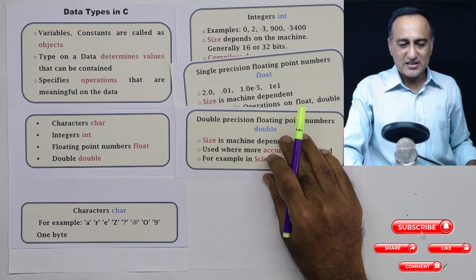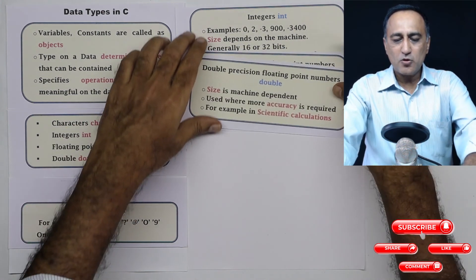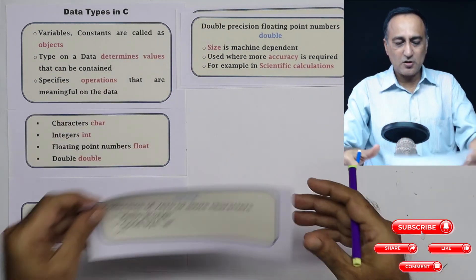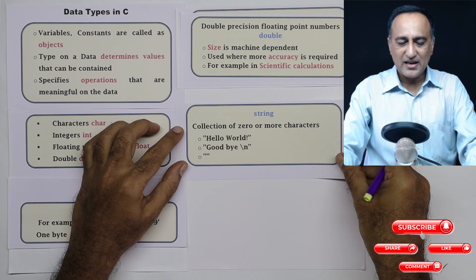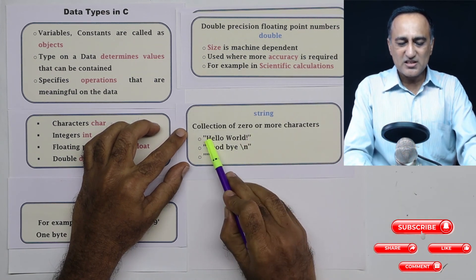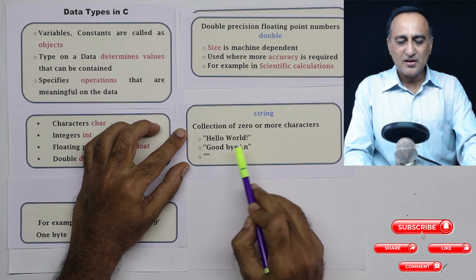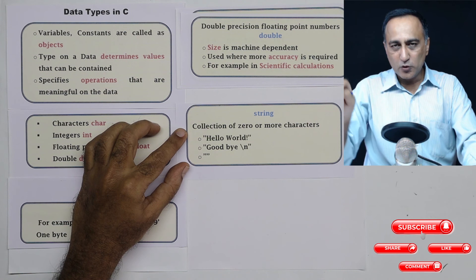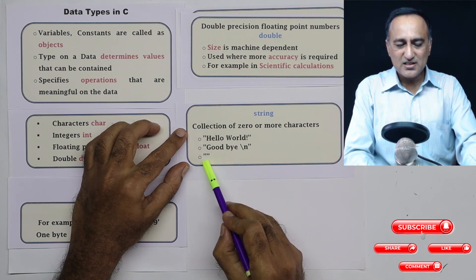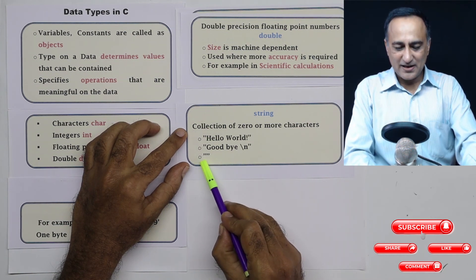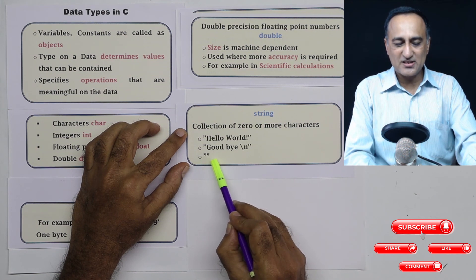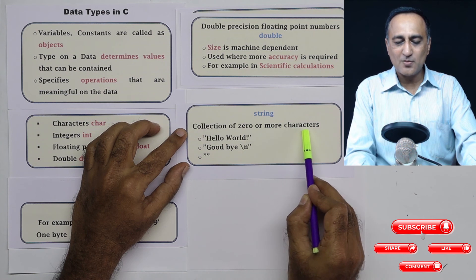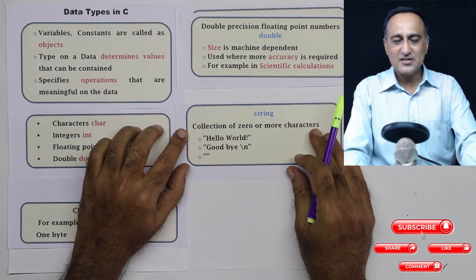Last but not least, I'm going to talk about a data type called string. A string is a collection of zero or more characters enclosed in double quotes. For example, 'Goodbye\n' - after goodbye is printed, the cursor will go to the next line. An empty string has no length and is known as the null string. String is simply a collection of zero or more characters.